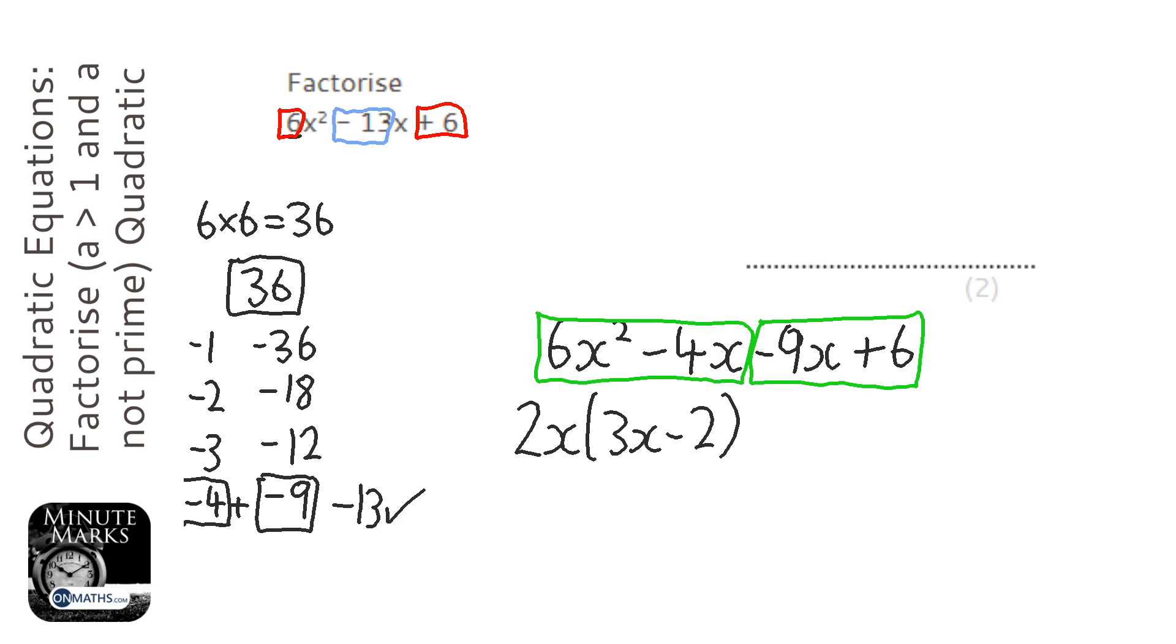OK. Now, here, because that first term, the 9x, is negative, I'm going to divide out a negative number. So I'm going to have a minus there. And 9 and 6 are both in the 3 times table. So it's minus 3 that I'm dividing out.